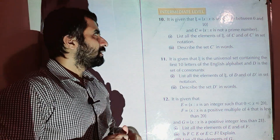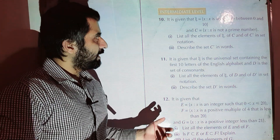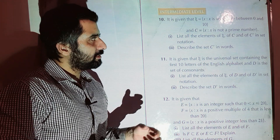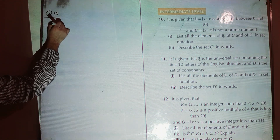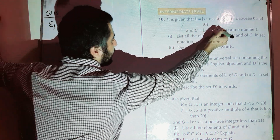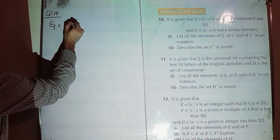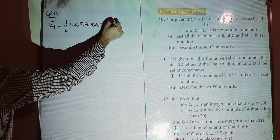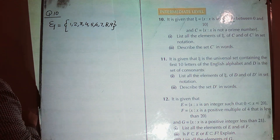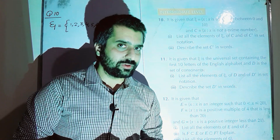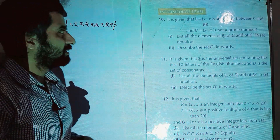Starting from question number 10, that is from intermediate level. It is given that the universal set is integers between 0 and 10 — so 1, 2, 3, 4, 5, 6, 7, 8, 9. I am not going to include 0 and 10 because there is no word 'inclusive' here. When there is no word inclusive, 0 and 10 are not included.